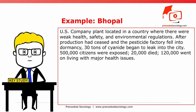This U.S. company plant was located in a country where there were weak health, safety, and environmental regulations. After production had ceased and the pesticide factory fell into dormancy, 30 tons of cyanide began to leak into the city. 500,000 citizens were exposed. 20,000 died. 120,000 went on living with major health issues, including cancer, blindness, respiratory issues, birth defects, heavy metals in mother's milk, and 6 million times more mercury in the groundwater than normal levels.